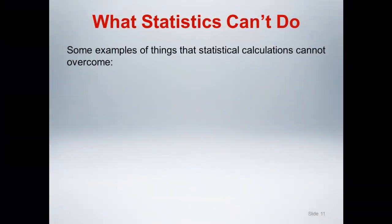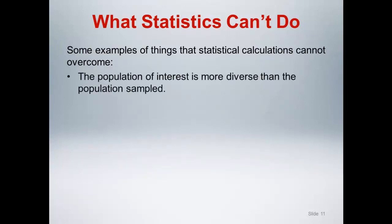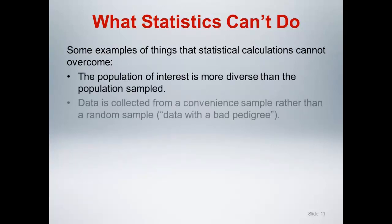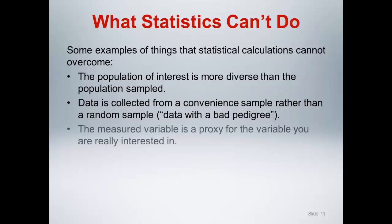It seems important at this point to make note of some examples of things that statistical calculations cannot overcome. The population of interest is more diverse than the population sampled. Data is collected from a convenient sample rather than a random sample, in other words, data with a bad pedigree. The measured variable is a proxy for the variable you are really interested in. An example of this is the use of coronary artery calcium scores or C-reactive protein as proxies for cardiovascular mortality risk.